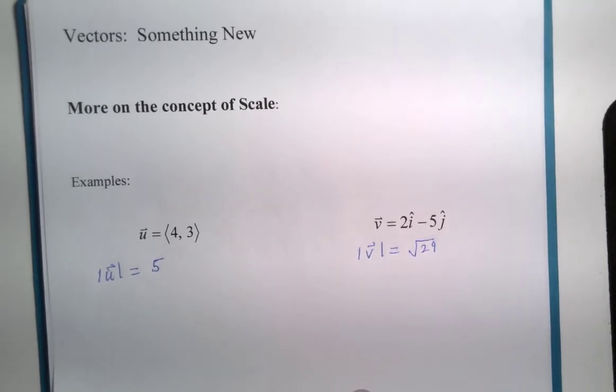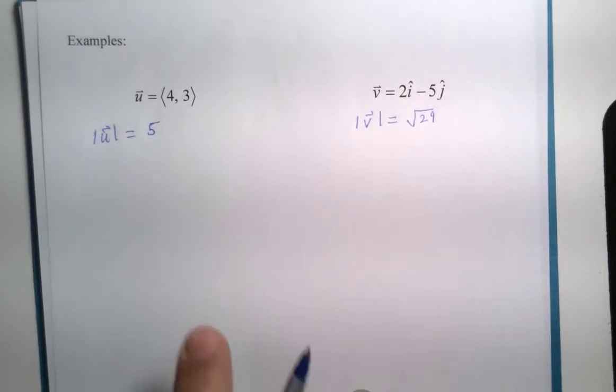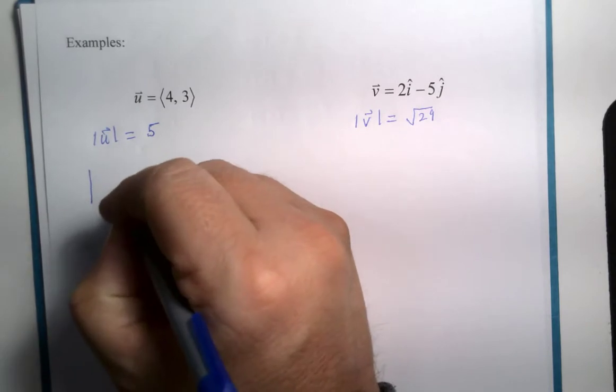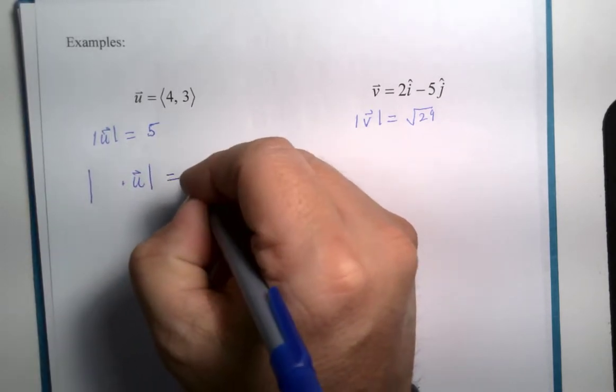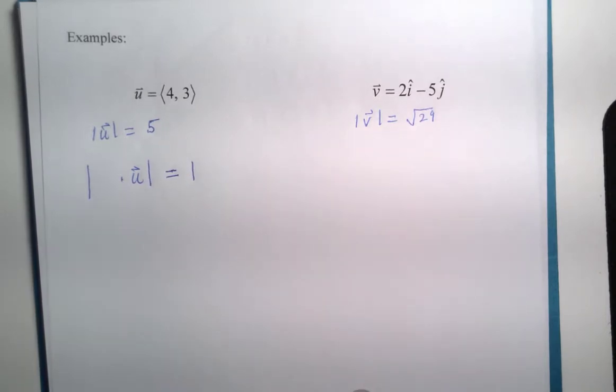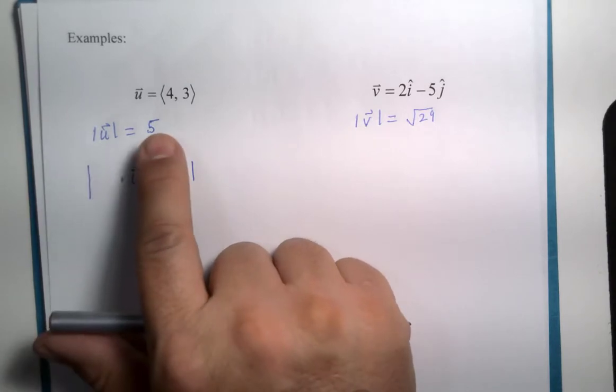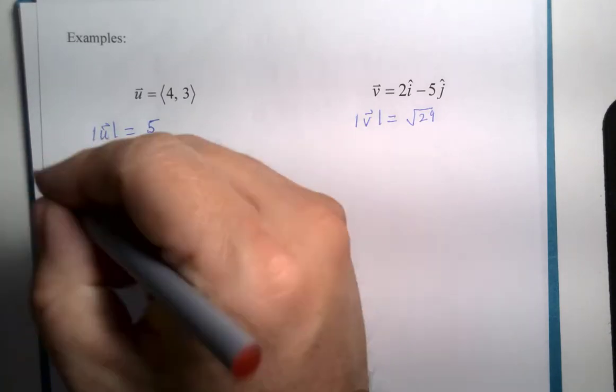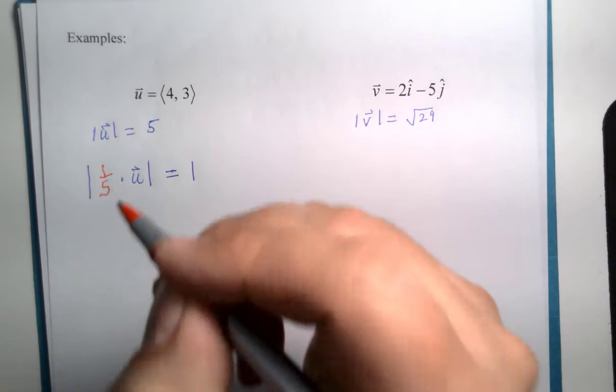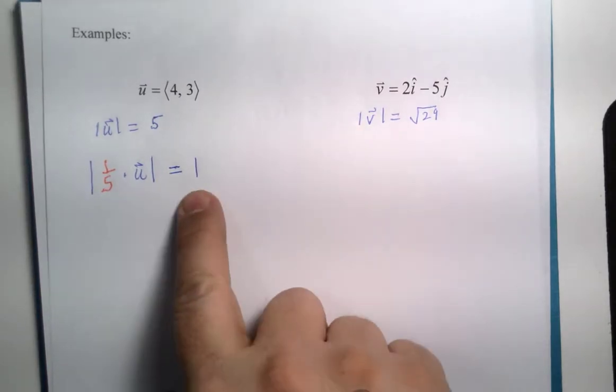So, what would I do to this vector? What would I multiply it by if I wanted the magnitude to be equal to 1? The original magnitude is 5, I want the new magnitude to be 1, and so you would either divide by 5 or multiply by 1 fifth. That should get us to a magnitude of 1.